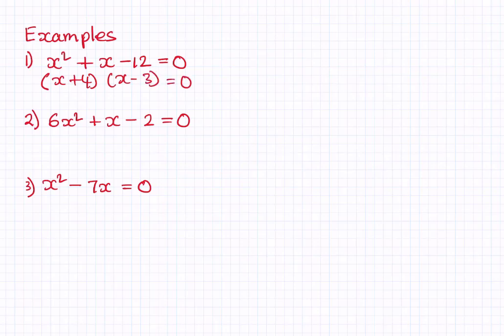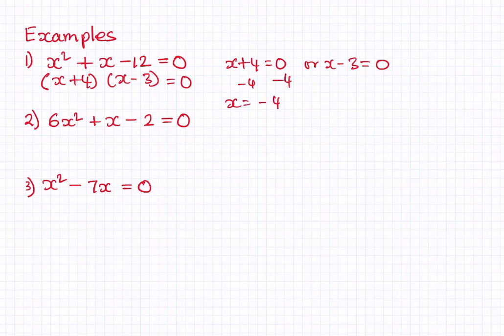Let's write down the two equations: x plus 4 equals 0 or x minus 3 equals 0. Subtracting 4 from both sides gives x equals minus 4. Adding 3 to both sides gives x equals positive 3. So the answers are x equals minus 4 and x equals plus 3.